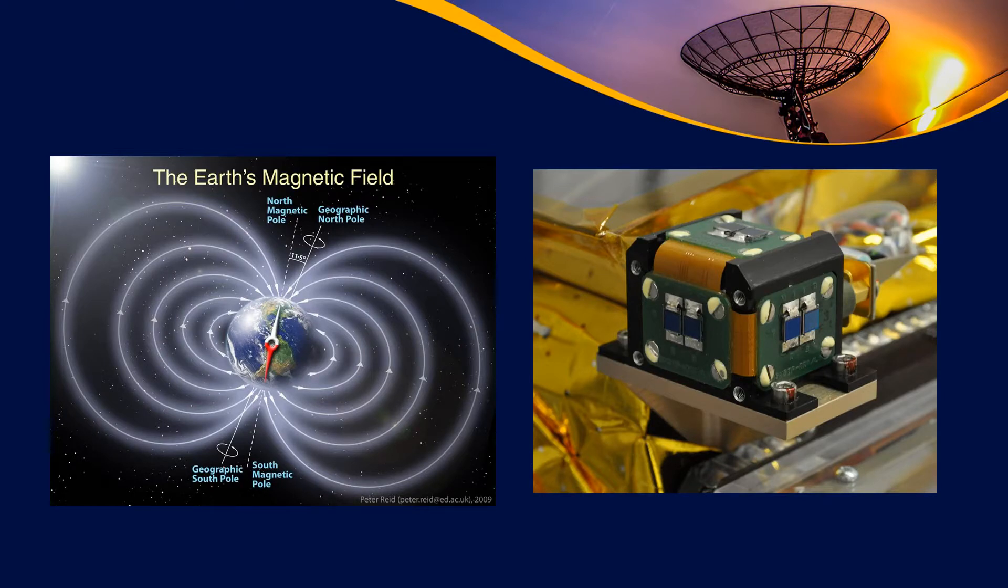On the right, you have a sun tracker. So this thing can just sense where the sun is, and the sun can be one of your vectors as well. It's pretty easy to see. You don't need anything too fancy, as you can see this thing is, to get a pretty high accuracy of where the sun's pointed.